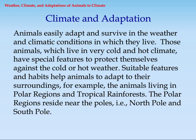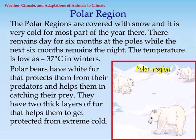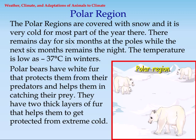The polar regions reside near the poles, that is, the North Pole and South Pole. The polar regions are covered with snow and it is very cold for most part of the year there. There remains day for six months at the poles while the next six months remains night. The temperature is as low as minus 37 degrees Celsius in winters. Polar bears have white fur that protects them from predators and helps them in catching their prey. They have two thick layers of fur that help them get protected from extreme cold.